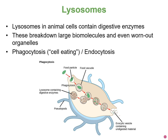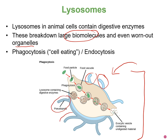Lysosomes are also part of the endomembrane system. Their main function is to break down large biomolecules — carbohydrates, lipids, proteins, nucleic acids — as well as old organelles or even whole cells, as seen in apoptosis. They can also help break down pathogens or other materials the cell takes in. Consider a white blood cell with extensions called pseudopods or pseudopodia that increase its surface area; it will take in food or bacteria through the process of endocytosis, where cells bring material into the cell.